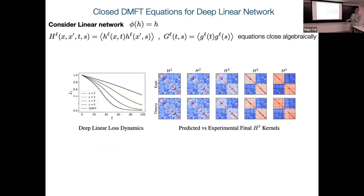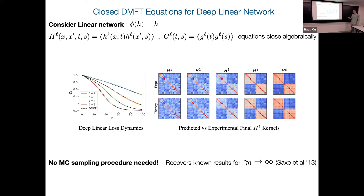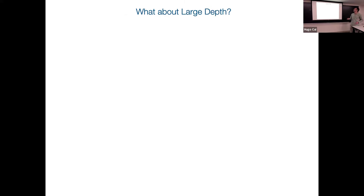For linear networks, the equations close exactly — you don't need Monte Carlo, because even in the feature learning regime you maintain Gaussianity. You can solve these efficiently as integral equations. Taking this parameter to infinity — the infinite feature learning limit — recovers the zero initialization scale limit studied in linear networks by Andrew Sachs and colleagues.